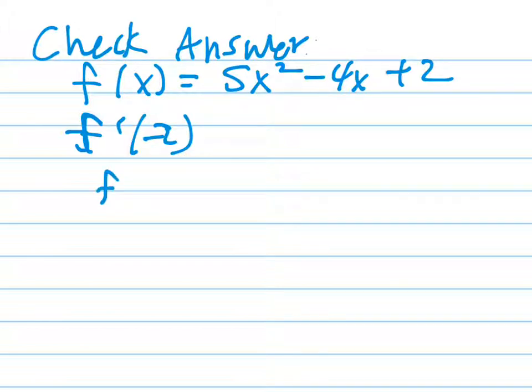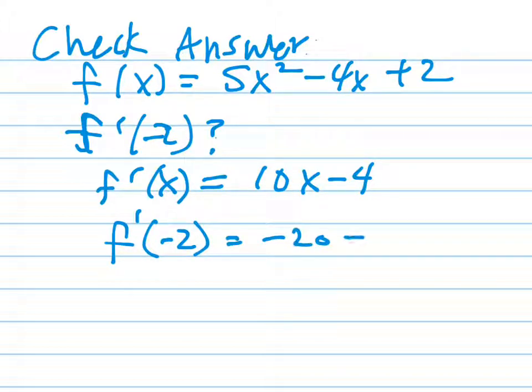If you've learned the power rule, then you know that the derivative function f prime of x is 10x minus 4. The question asks us to evaluate at f prime of negative 2. So if I have f prime of x, I just plug in negative 2. That'll give me negative 20 minus 4, which is the same answer we got a moment ago. So everything checks out.